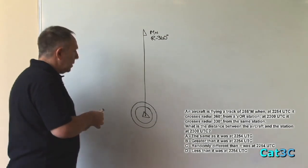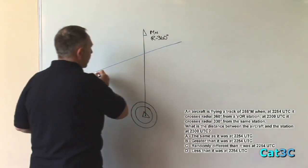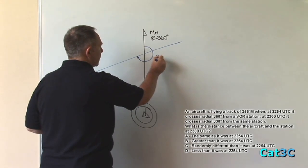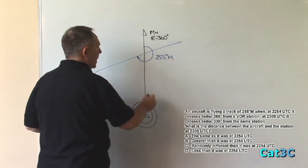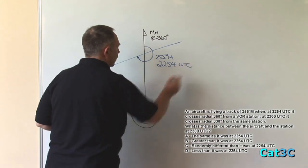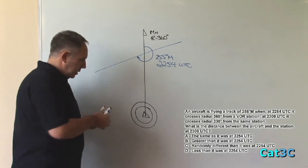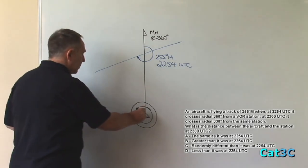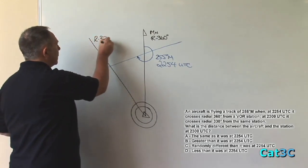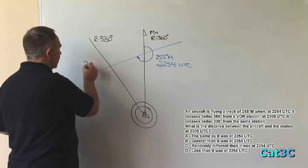Now we know that the aircraft crosses the 360 degree radial on a bearing of 255 degrees magnetic at 2254 UTC. We also know that the aircraft, a short while later crosses the 330 degree radial from the same VOR at 2300 UTC.